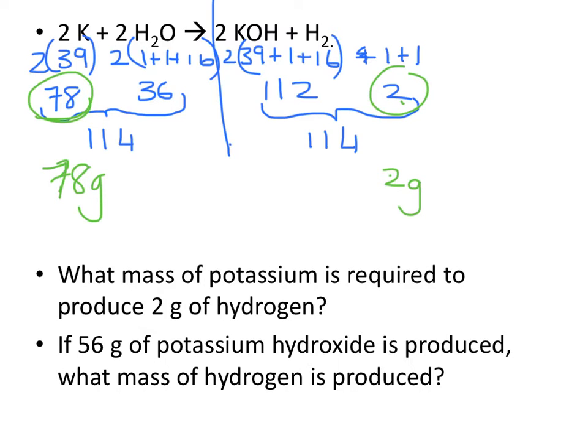If 56 grams of potassium hydroxide is produced, what mass of hydrogen would I get at the same time? Well, 56 from 112, I've divided by 2, so I'm going to take 2, divide it by 2, and I'm going to land up with 1 gram.